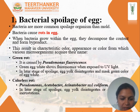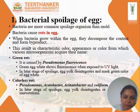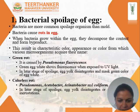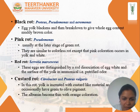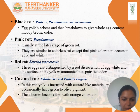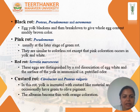Green rot is due to Pseudomonas fluorescens. It creates green color in egg white, fluorescently exposed in the presence of UV light. In the later stage of spoilage, egg yolk disintegrates and masks the green color in the egg white. Colorless rot is also caused by Pseudomonas species and spoils the egg yolk without color. Black rot is due to Proteus, Pseudomonas, and Aeromonas — the egg yolk blackens and breaks down to give the whole egg content a muddy brown color. Pink rot is due to Pseudomonas species and usually occurs at the later stage of green rot.